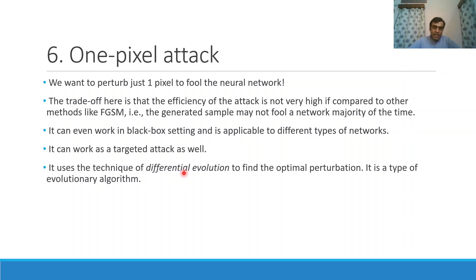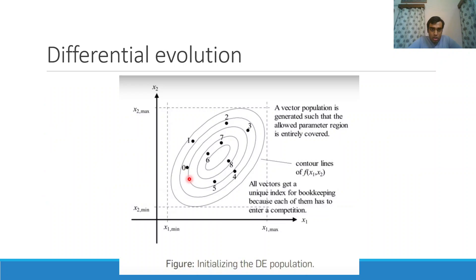This one pixel attack can even work in black box settings and is applicable to different types of networks. It also works as a targeted attack. The main different technique that is used here is differential evolution to find the optimal perturbations. Earlier we were using gradient-based methods, but now we will use a type of evolutionary algorithm. The differential evolution method works even when the function is not differentiable. Now we will try to slightly explain more about this method.